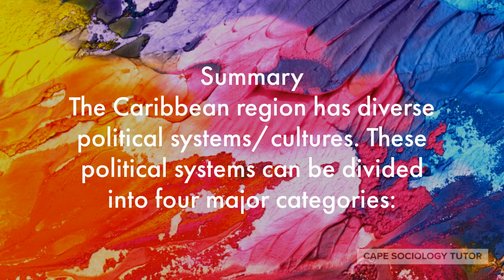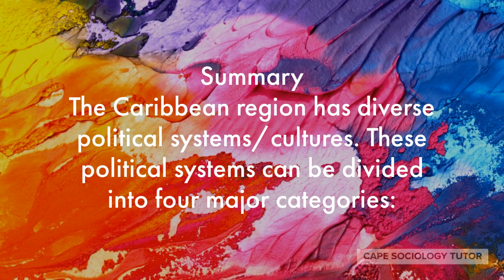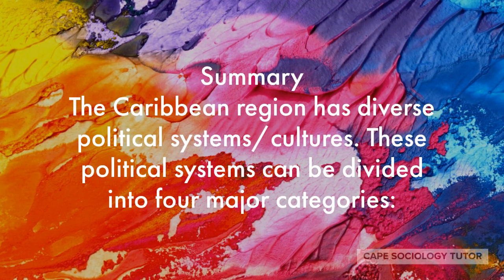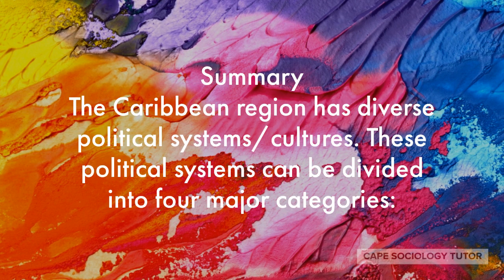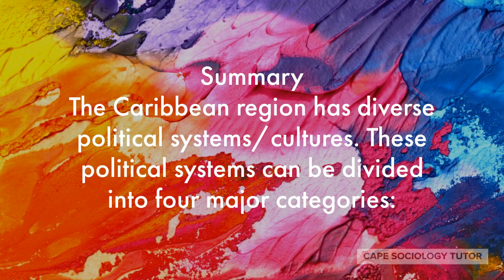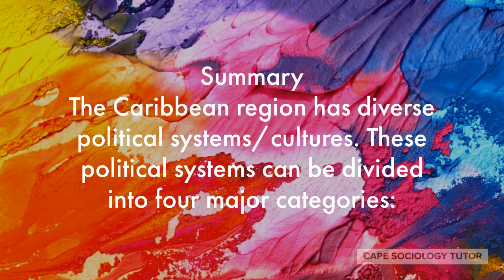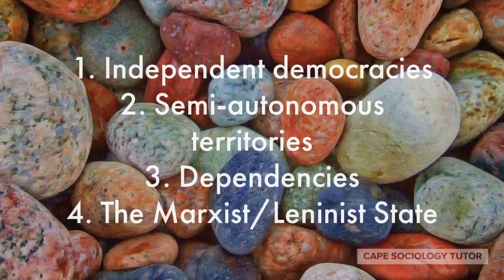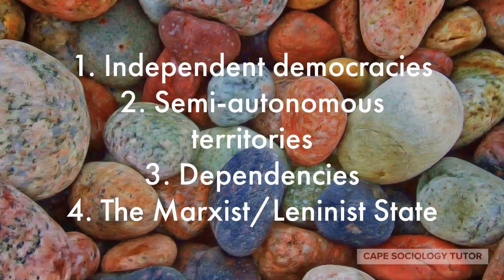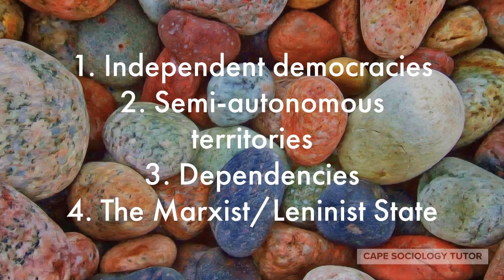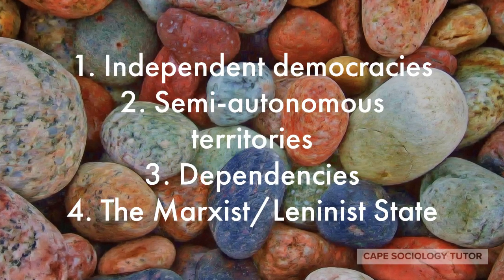To summarize what we've learned in this tutorial, the Caribbean region has diverse political systems or cultures. These political systems can be divided into four major categories: independent democracies, semi-autonomous territories, dependencies, and the Marxist-Leninist state.